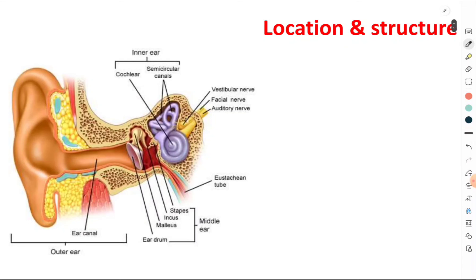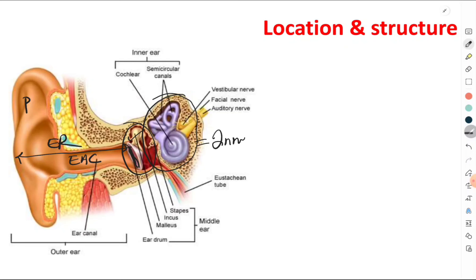In order to understand how the vestibular apparatus functions we have to know its location and structure. Looking at this slide showing the structure of the ear: this is the pinna, this is the external auditory canal, and both constitute the external ear. The tympanic membrane acts as a border between the external ear and the middle ear. The middle ear contains the ear ossicles. What we are interested in is the inner ear, because the vestibular apparatus is present in the inner ear.